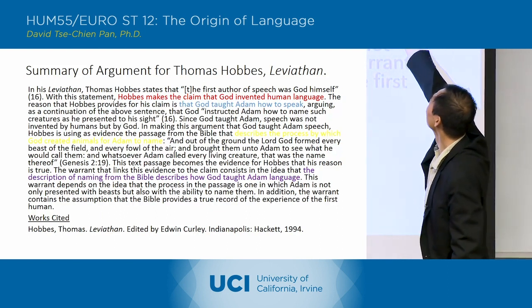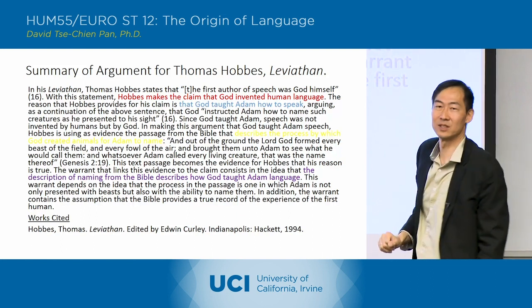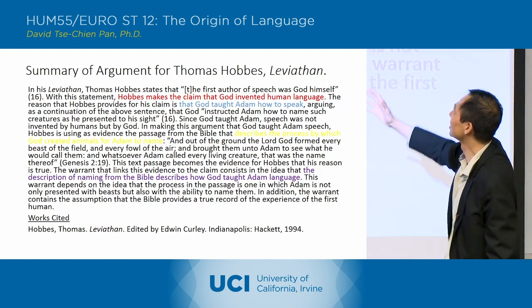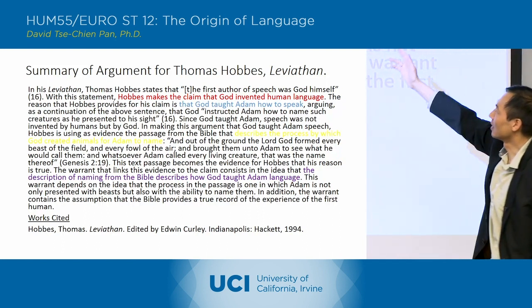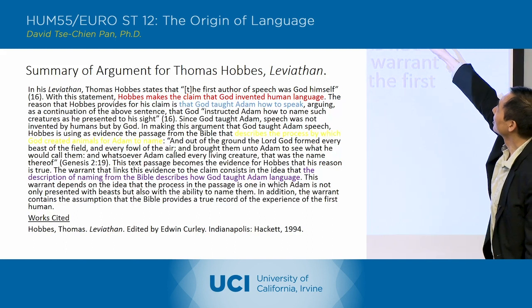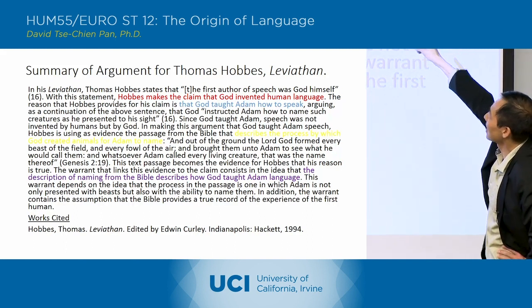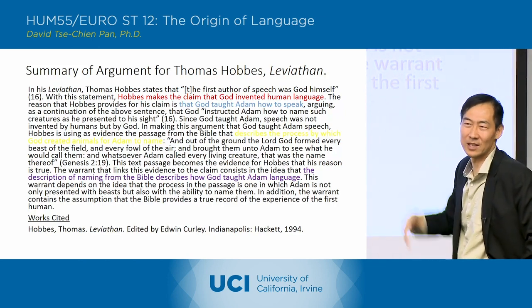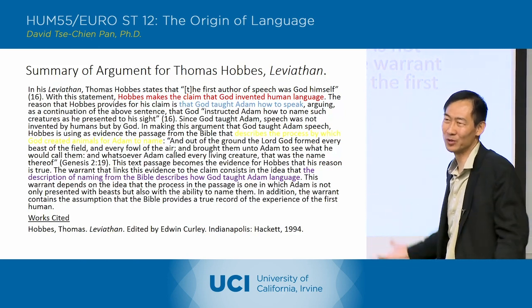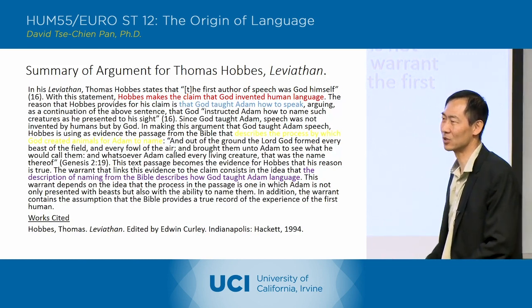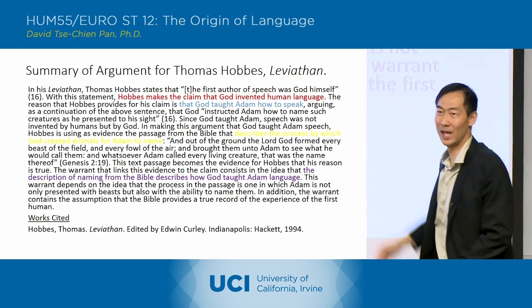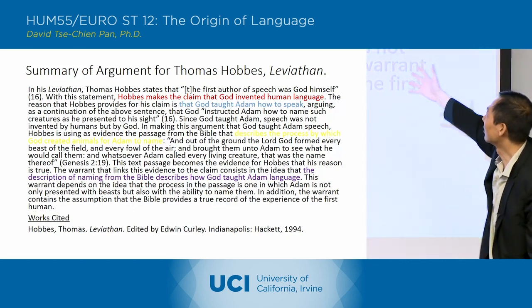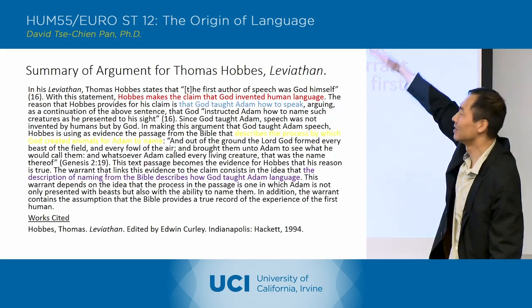There's another quote: 'instructed how to name such creatures as he presented to his sight.' Again, you've got the quote and then your explanation of it. The same goes for the evidence. Note that Hobbes is only really pointing to scripture — he doesn't actually quote the Bible, but he's assuming we all know the passage. So you fill in the blanks and give the passage, which is what I've done here. Then you have the warrant that explains those linkages.